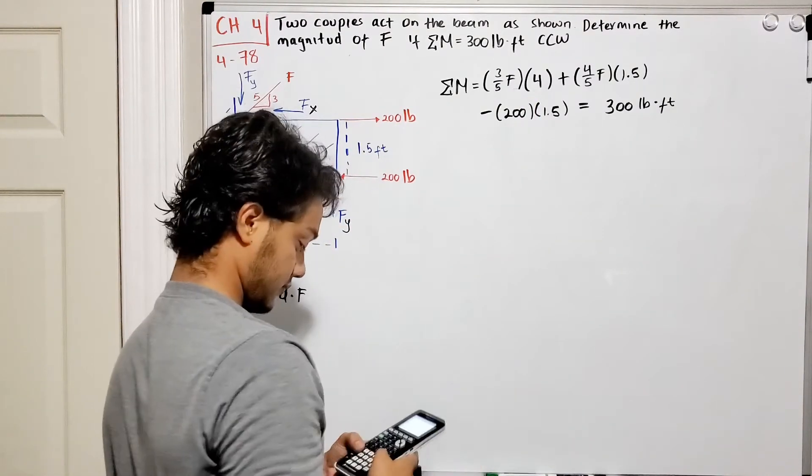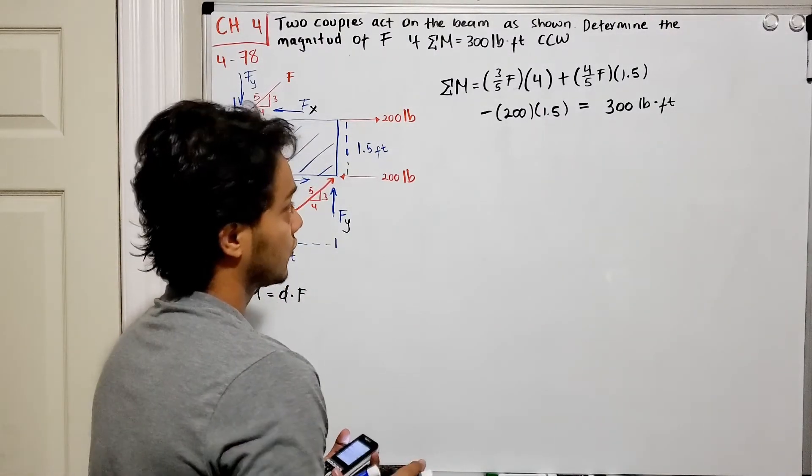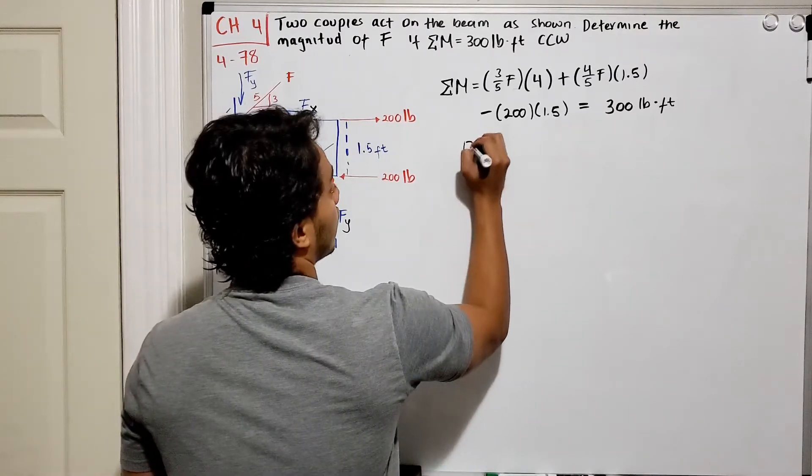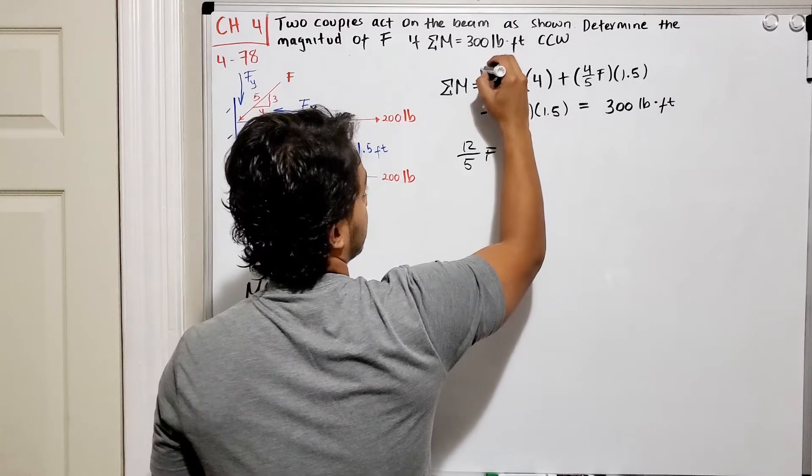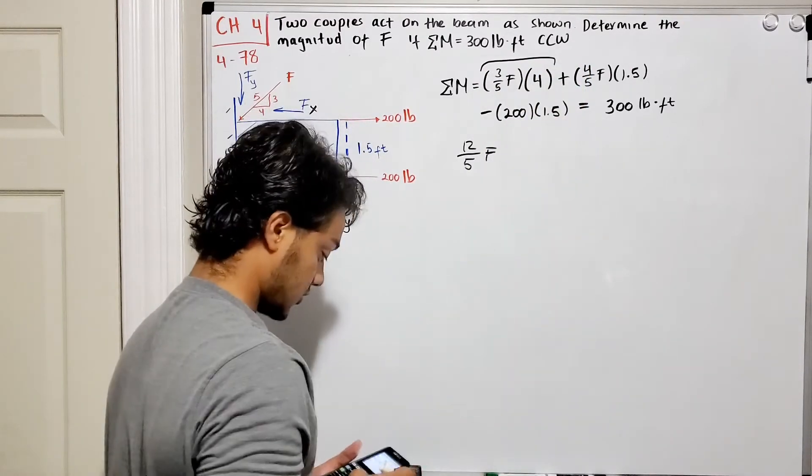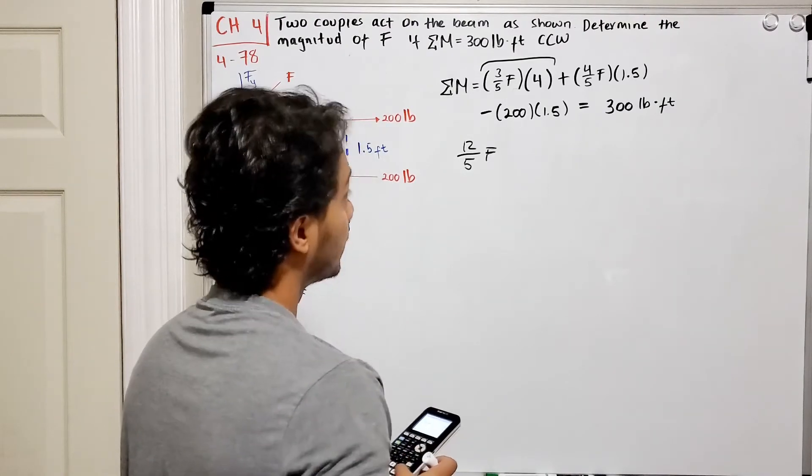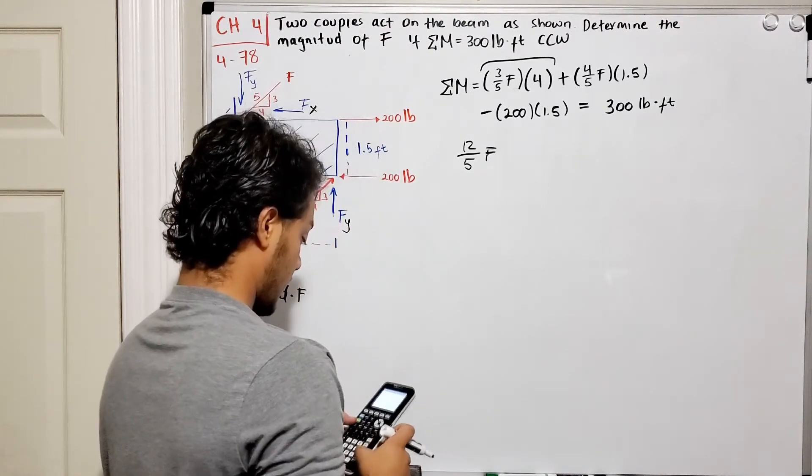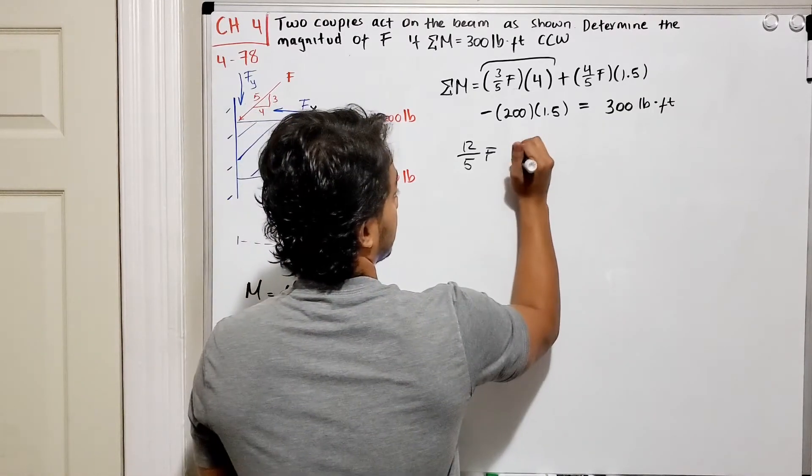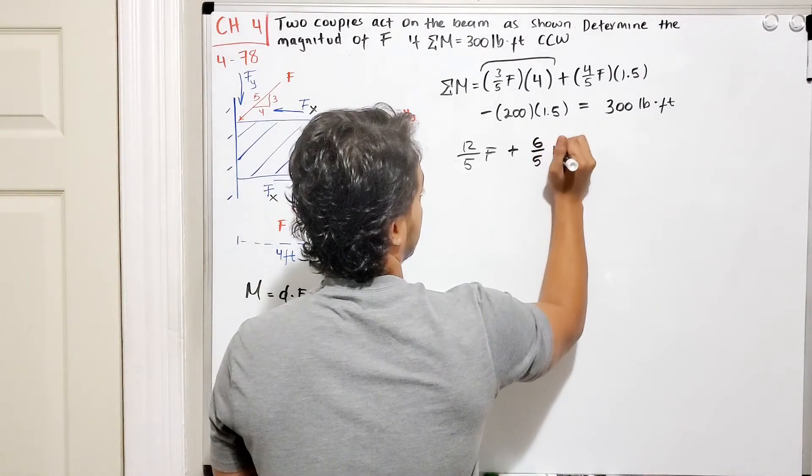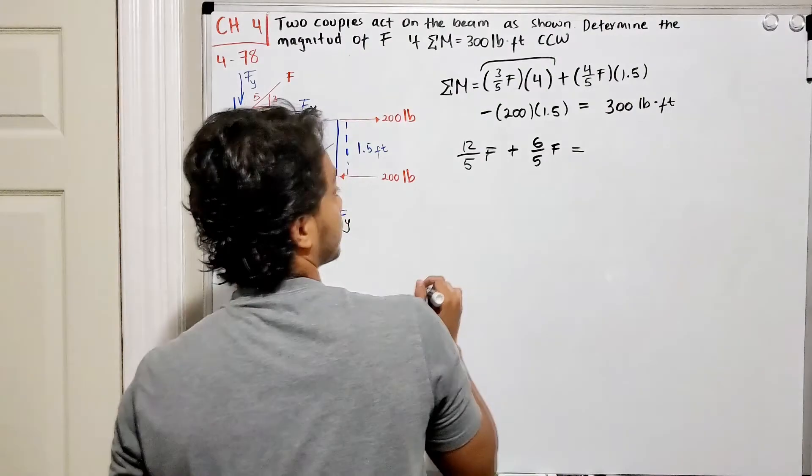So we have 3 out of 5 multiplied by 4 gives me, well we can leave it into fractions, which is 12 over 5 of my force F. That's what this total gave me. Now what about the next one? It's going to be 4 out of 5 multiplied by 1.5, and this gives me 6 out of 5 of my force F.